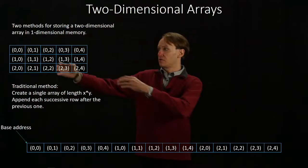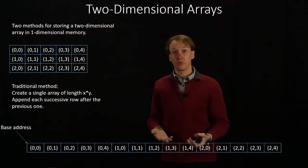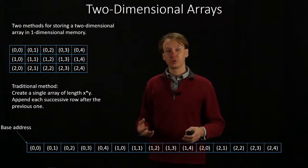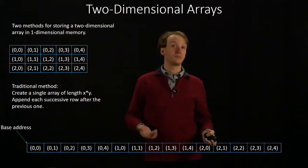So in this case, I'm just taking rows out and tagging them on at the end after the previous row. And I can just keep doing that until I've converted my entire two-dimensional array into a one-dimensional one.